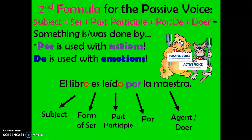Let's say that together. The formula is: subject plus ser plus past participle plus por or de plus agent or doer. We use this formula when something is done by, was done by, or used to be done by someone. We're going to use por with actions, like 'the ball is hit by the batter,' and de with emotions, like 'the students are loved by their teacher.' Let's look at an example of this word-for-word translation using the passive voice.